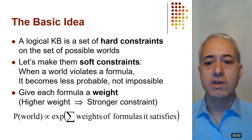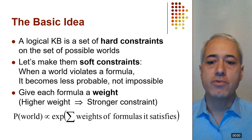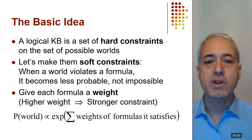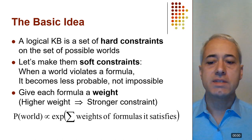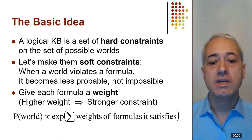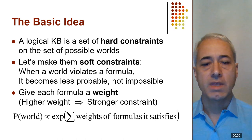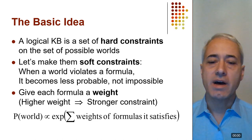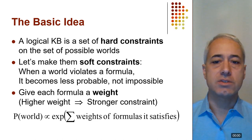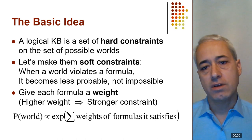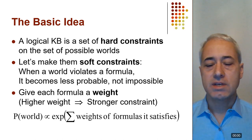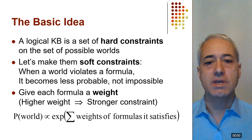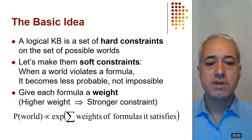So instead, what we can do is make those formulas in the logical knowledge base be soft constraints, so that when a world violates a formula, instead of immediately becoming impossible, it just becomes less probable. We give each formula a weight, such that a higher weight corresponds to a stronger constraint. The probability of a world is just the exponentiated and normalized sum of the weights of the formulas that the world satisfies. Very simple idea.